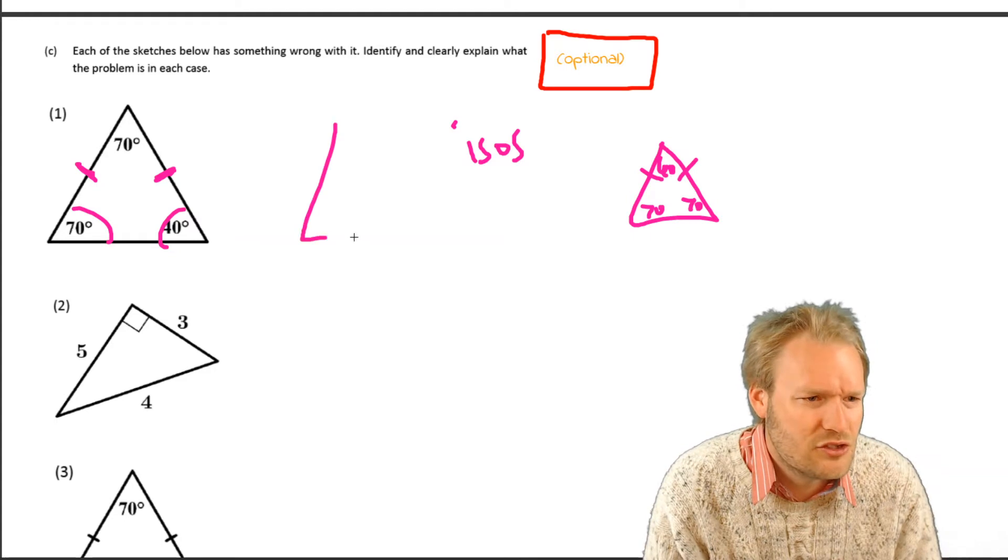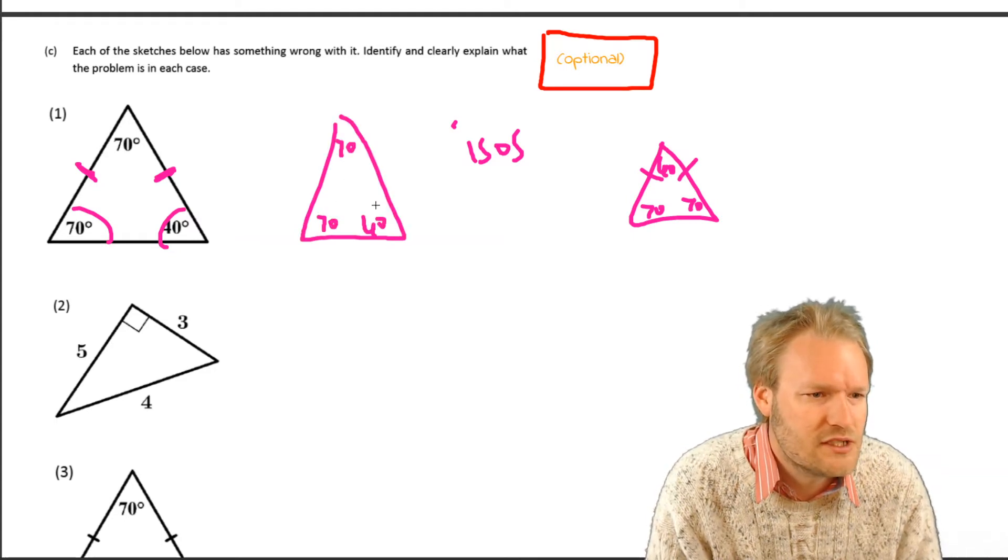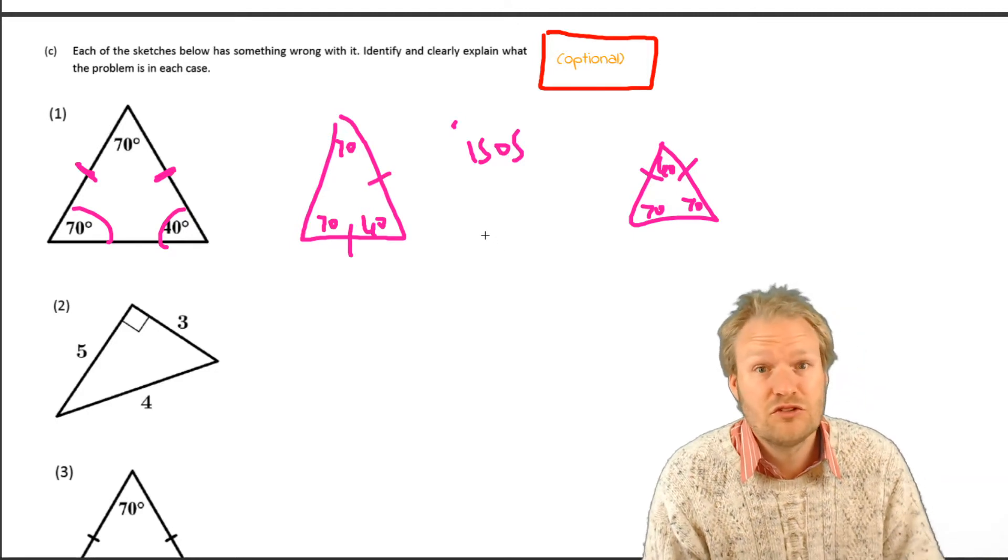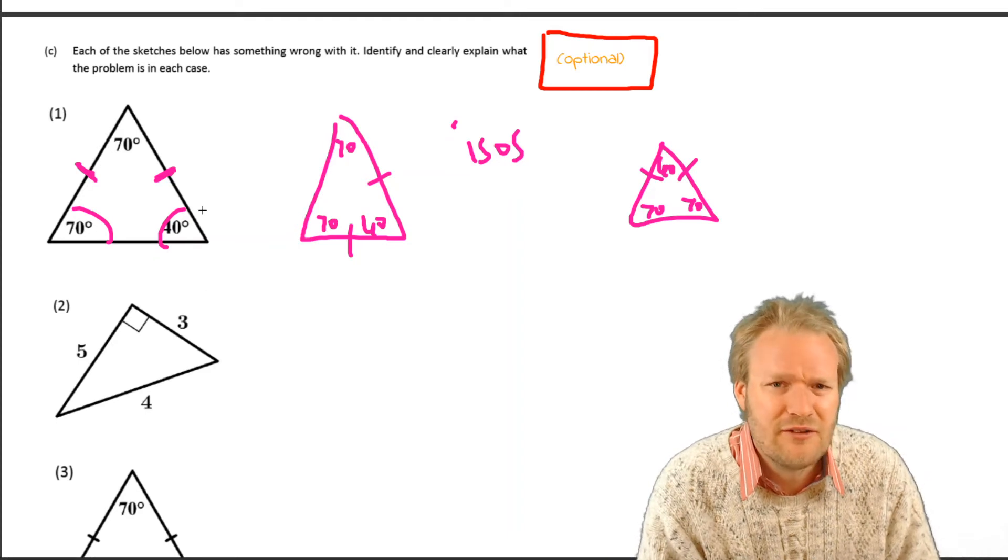Or maybe the triangle should have been drawn 70, 70, 40. Maybe the line should have been there. So can you see there are a few different ways of explaining how you might fix the diagram.